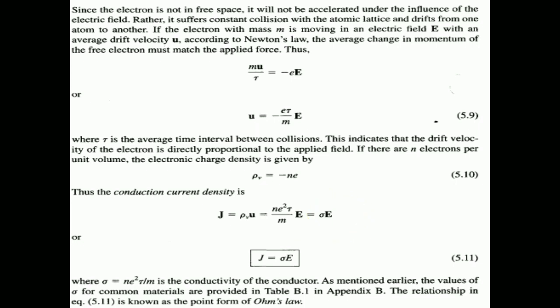To summarize: convection current density occurs only in an insulating medium such as vacuum, liquid, or rare gas — it does not satisfy Ohm's law. Conduction current density satisfies Ohm's law and takes place only in a conductor. That is all about conduction current and convection current.